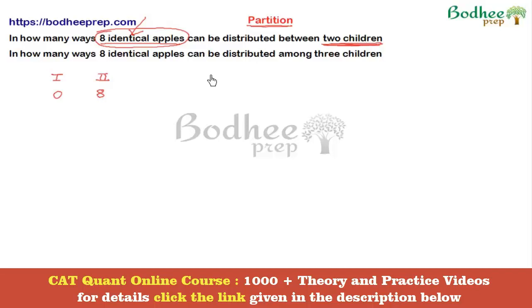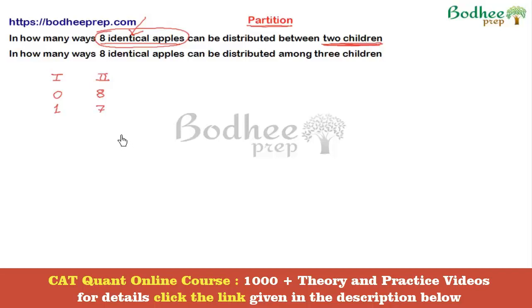The only distinguishing factor is the number of apples each child gets. Another way is one apple to the first child and seven to the second. This is different from the previous one because the first child is getting one instead of zero. We can go on listing: two-six, three-five, four-four, five-three, six-two, seven-one, and eight-zero. Every time, the sum of apples must be eight.